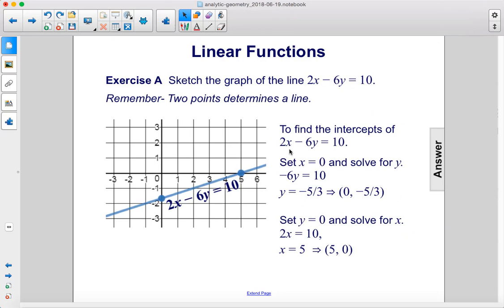To find the intercepts, you would set x equal to 0, solve for y, set y equal to 0, solve for x. This is exactly what we did, and this is the line that we drew.